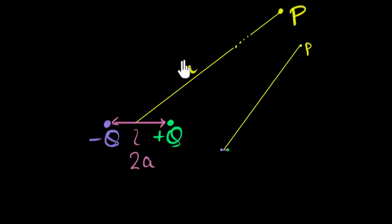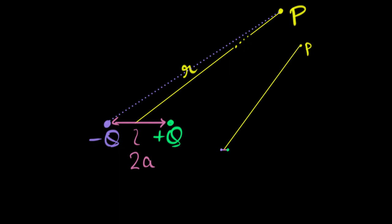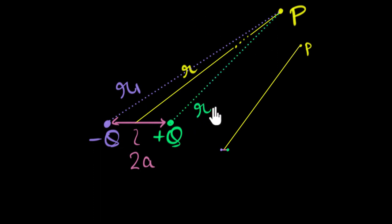All I have to do is figure out the potential due to each charge and add them up. But the problem is I don't know the distance of point P from each charge — r is the distance from the center. So I'll draw lines from each charge to P and call the distance from the positive charge to P as r2, and from the negative charge to P as r1.